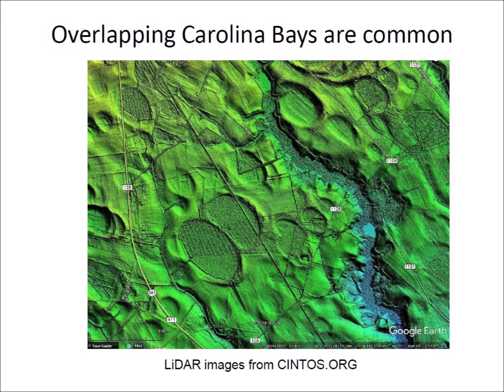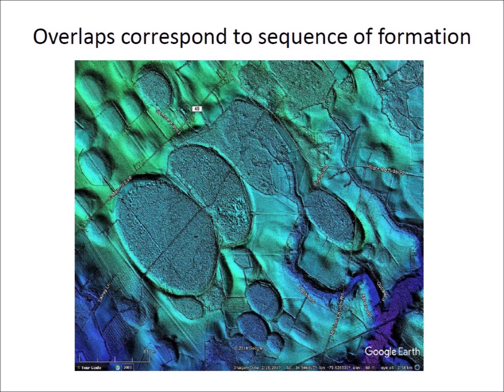Michael Davias established a database of LiDAR images accessible to the public at the website cintos.org. Examination of the images shows that overlapping Carolina Bays are very common. A large Carolina Bay can partially cover a smaller one, and a small Carolina Bay may partially cover a larger bay or may be completely contained within a larger bay. These overlaps correspond to the sequence of formation following the principle of superposition.